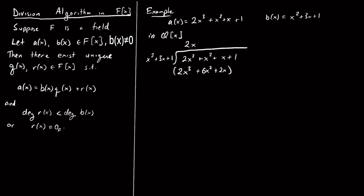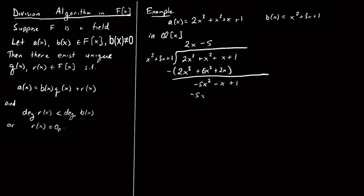Now I subtract: 2x³ − 2x³ = 0; x² − 6x² = −5x²; x − 2x = −x; and I drop down the 1. Now I look at −5x² and ask: how do I get from x² to −5x²? I multiply by −5. So I write −5 up top and multiply the whole polynomial: −5x² − 15x − 5. I'm going to subtract this off.